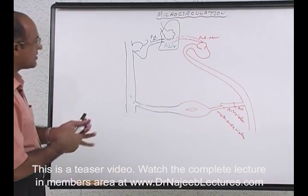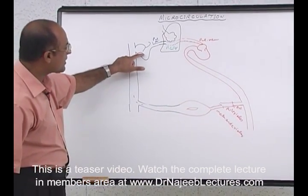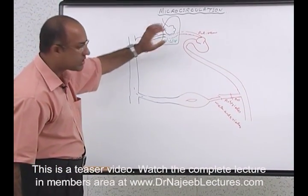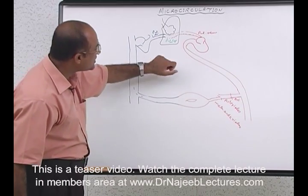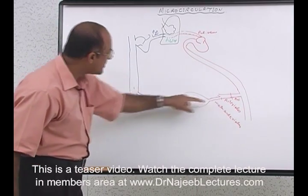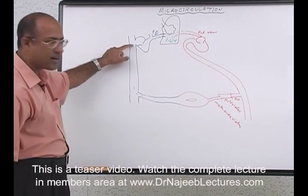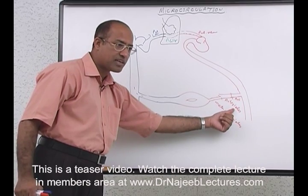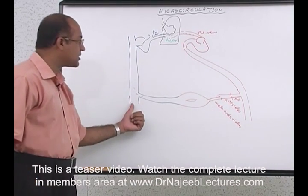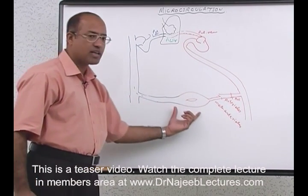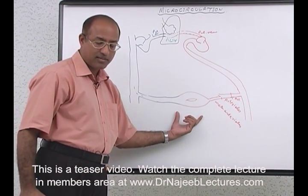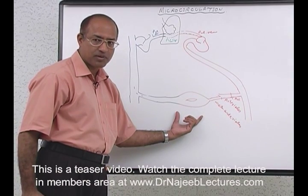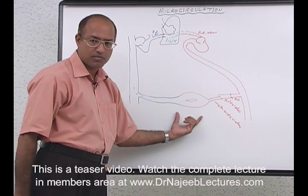So between the right heart and the left heart, we have pulmonary microcirculation. And between the left heart and the right heart — between the systemic arterial tree and systemic venous tree — we have systemic microcirculation.